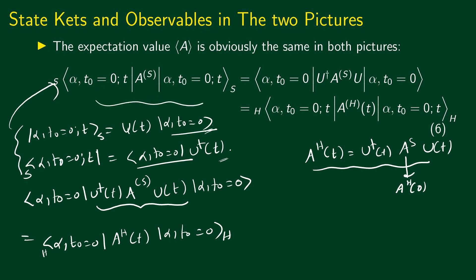So we see that the expectation values are the same in both pictures. When it comes to the time evolution of expectation values — something we can access in a measurement — both pictures coincide. Both pictures give the same predictions for the results of measurements, and we can use either picture according to our convenience.